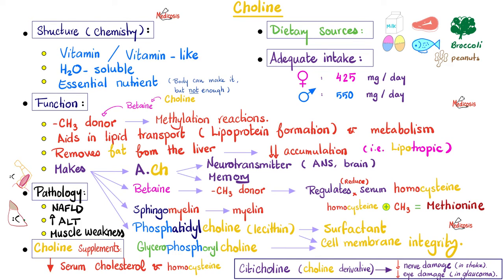Choline helps with lipid transport by aiding in the production of lipoproteins — the vessels by which we transport fat from the liver to the blood. That's why choline deficiency causes fat to pile up in the liver, resulting in fatty liver disease. The substance that removes fat from the liver is called a lipotropic agent or lipotropin, and the act of removing fat from the liver is called lipotropy. Choline is a lipotropic agent.